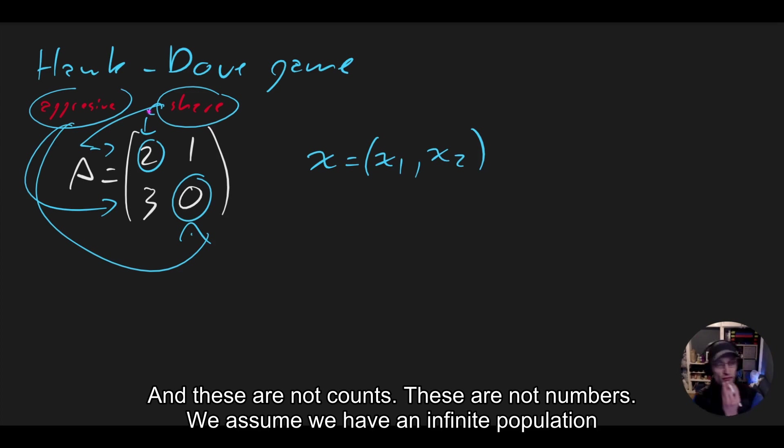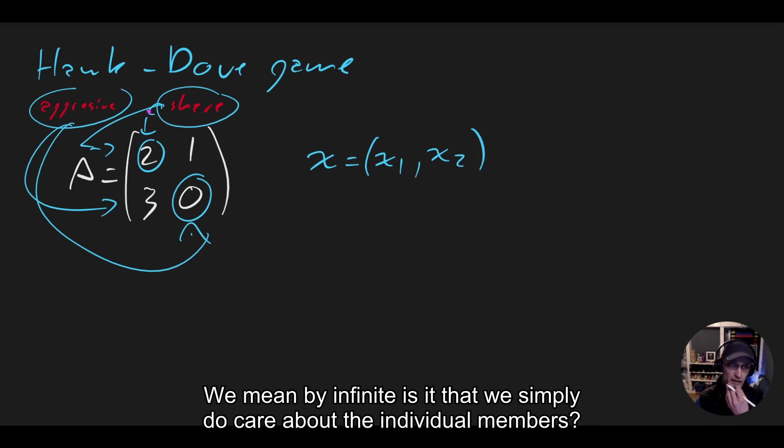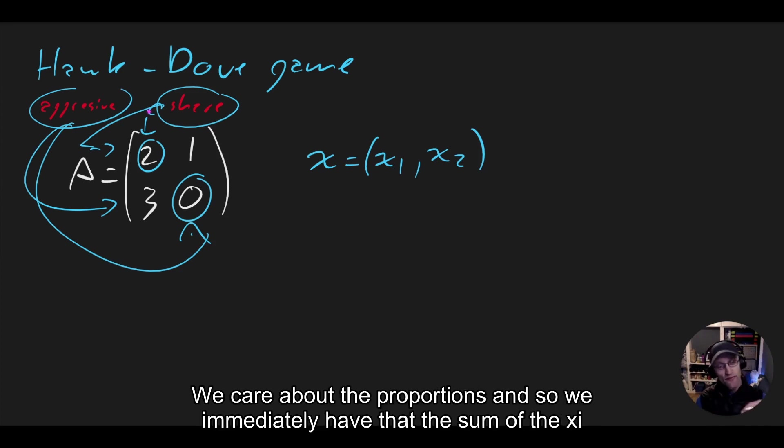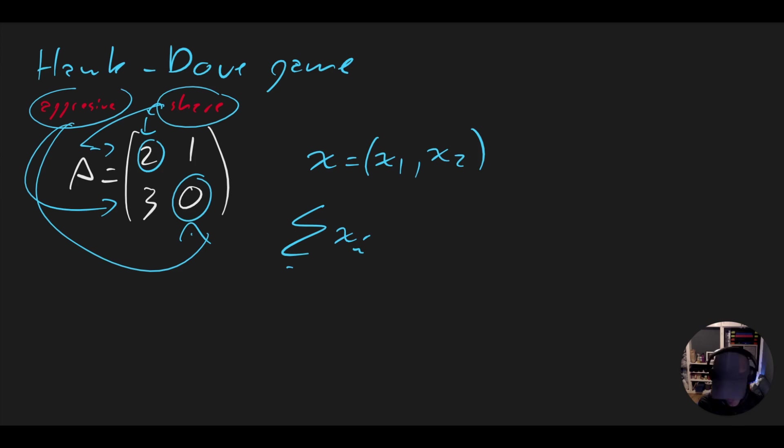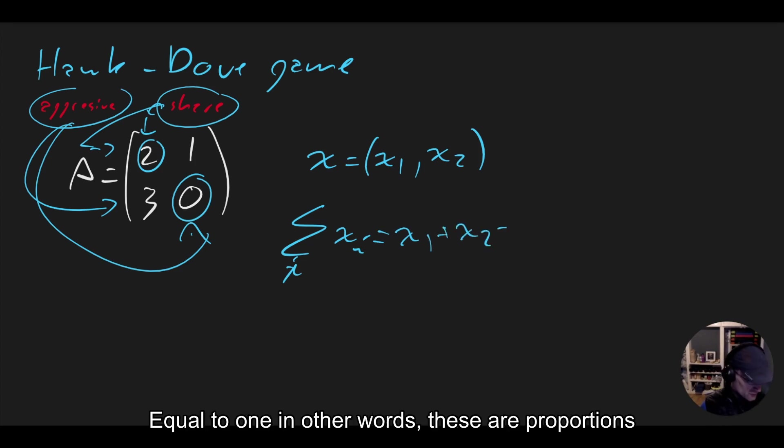And these are not counts, these are not numbers. We assume we have an infinite population. What we mean by infinite is that we simply do not care about the individual members, we care about the proportions. And so we immediately have that the sum of the xi over i, which in this case is just x1 plus x2, is equal to 1. In other words, these are proportions.